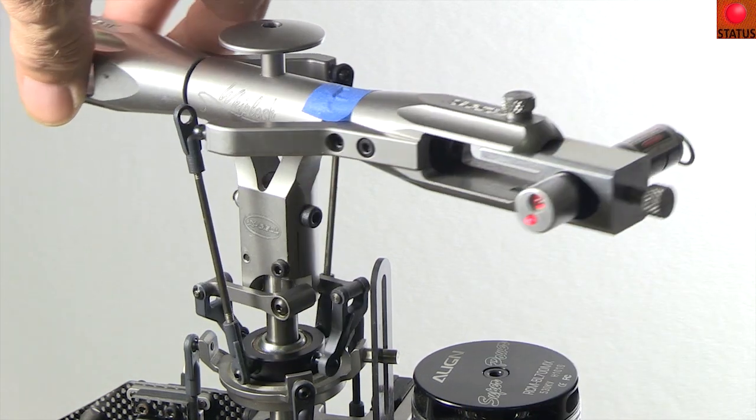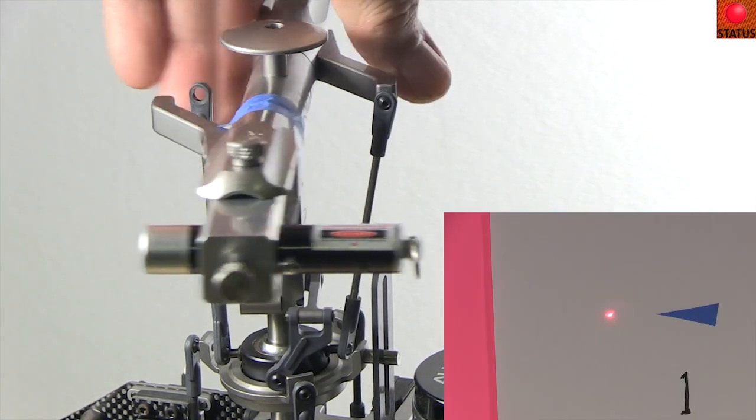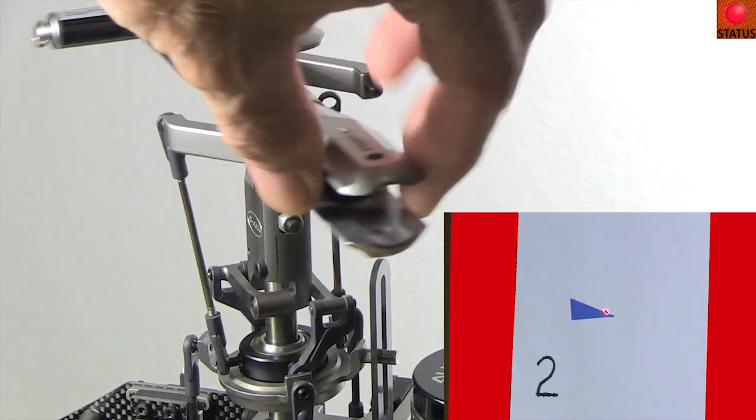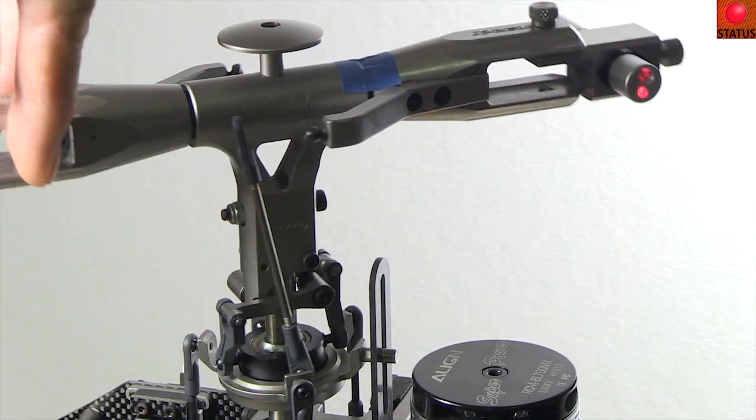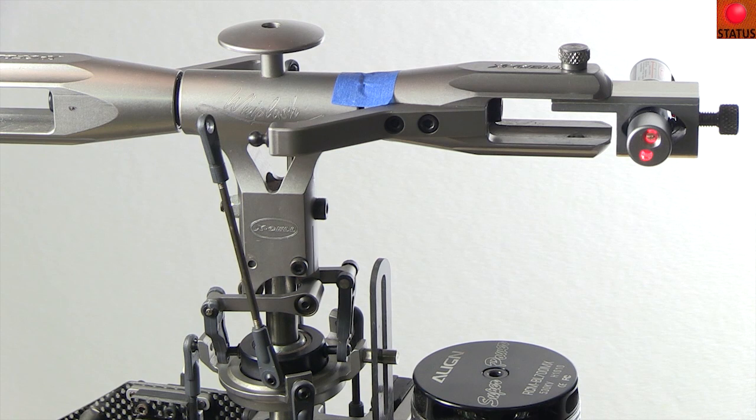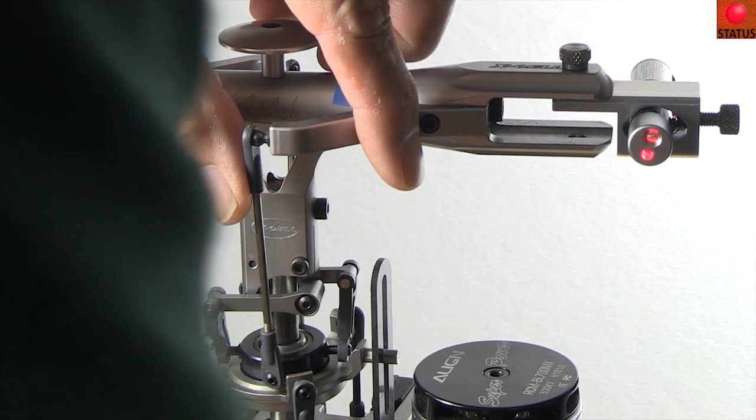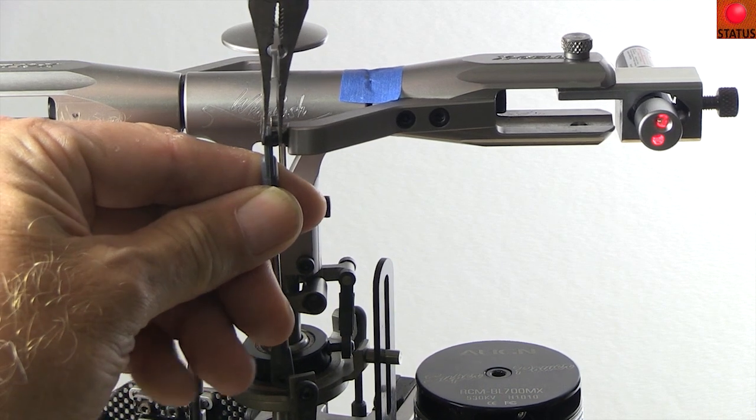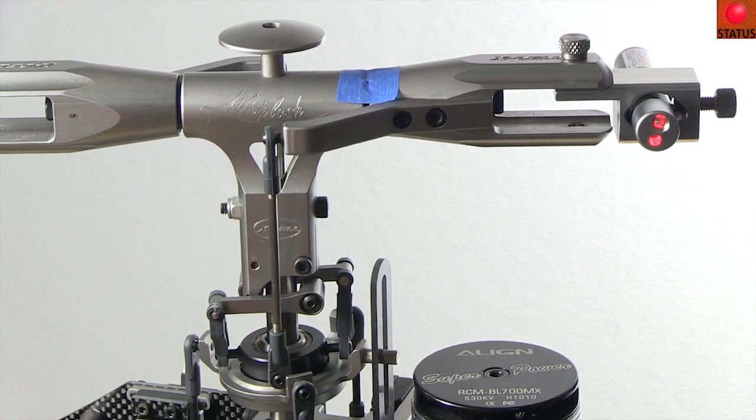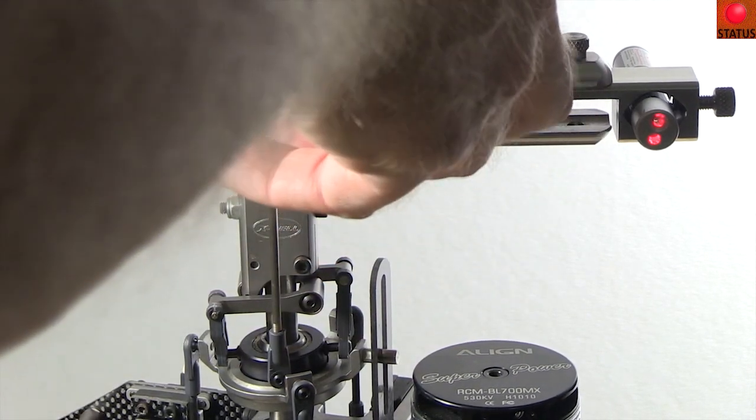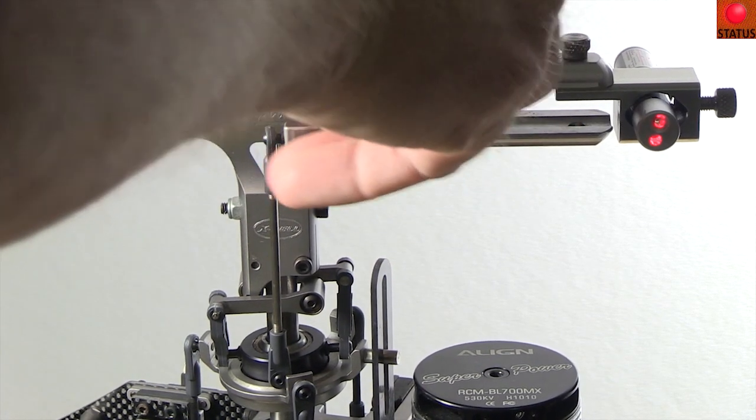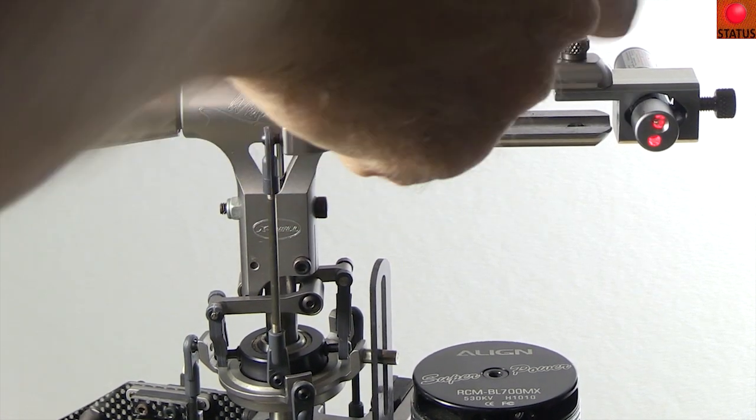Turn the head and check to make sure the laser travels exactly over all three marks. Now hook the control rod back up to the blade grip and take off the tape. Now the swash plate will be controlling the angle of the blade grip. If the swash plate isn't level, the grip will rotate and the laser will be off the mark.